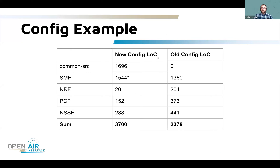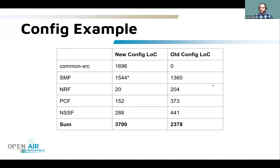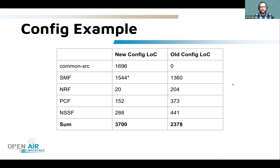Here are the lines of actual code without comments for the configuration migration. In some NFs we have slightly more lines, but for the NRF, we now have only 20 lines instead of 200 — meaning 180 lines were duplicated. The same is true for PCF and NSSF. The SMF still has more code because it has many configs and the migration isn't complete there yet. Overall, if you count all NFs, there is a net loss of lines of code, which is good.